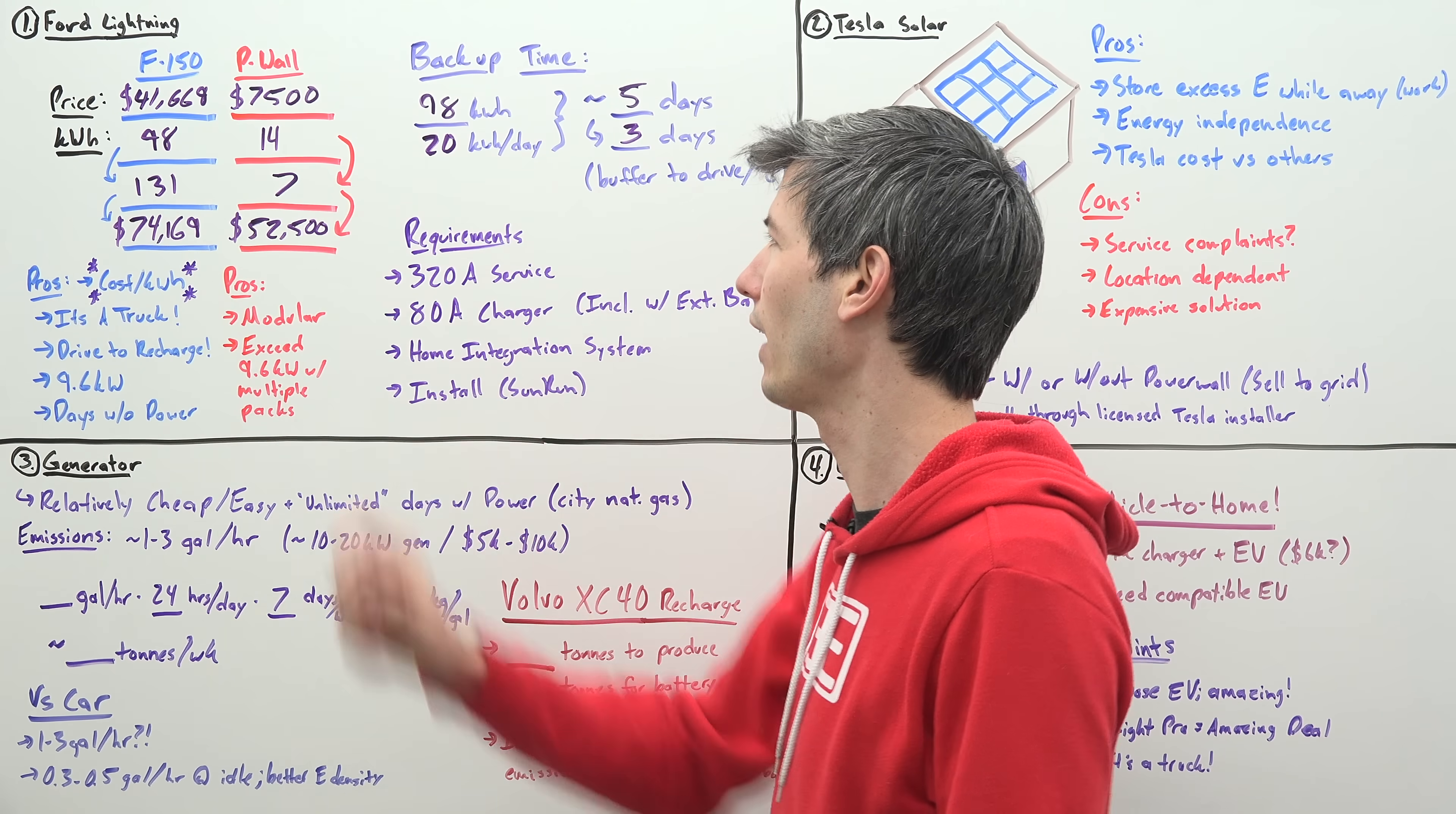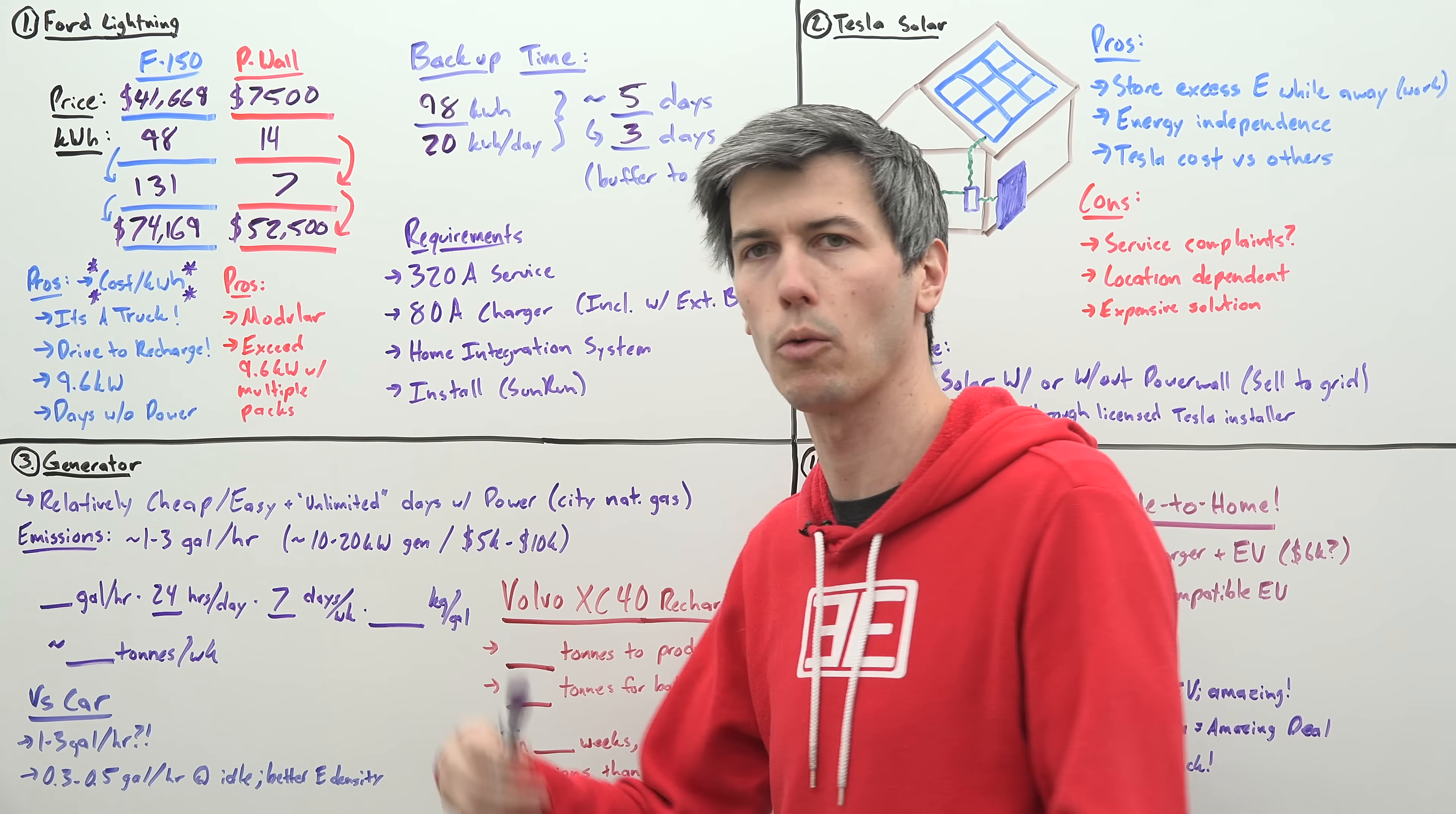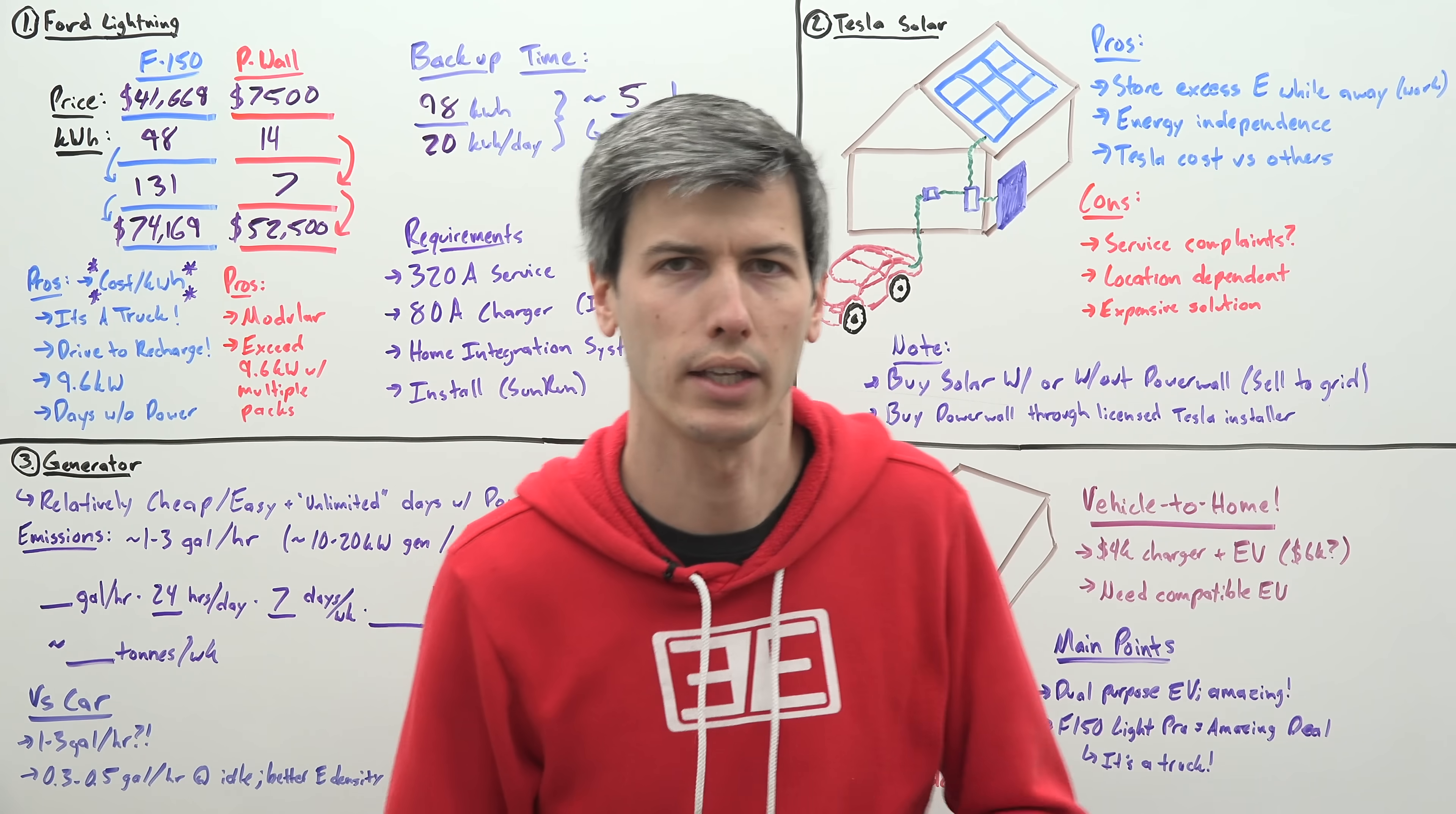For the other people, you're going to have to buy, if you're just getting this pro, you're going to have to buy that charger separately. You also have to buy a home integration system so you can connect all this to your home setup and make it work with your local grid. And then you're also going to have to pay for installation, which is handled by Sunrun, assuming you're not going to DIY this. So it's not as simple as you just buy a Ford truck and it works.